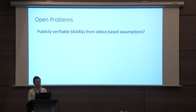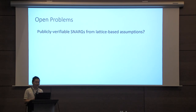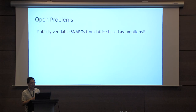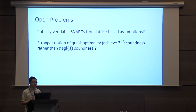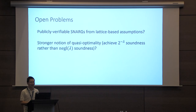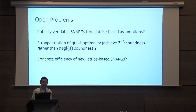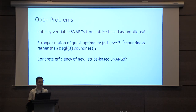Let me conclude with several open problems. All of the SNARK constructions described here, based on lattices, are only secretly verifiable — they're in a designated verifier model where soundness only holds if the proof system requires knowledge of the secret decryption key. One important question is whether we can obtain publicly verifiable SNARKs, as an analog of pairing-based SNARK constructions. Another question is trying to achieve a stronger notion of quasi-optimality — achieving 2 to the minus lambda soundness against 2 to the lambda bounded provers. Finally, our new lattice-based SNARK candidates seem to be lighter weight with asymptotically stronger properties, so we're in the process of developing implementations and comparing them against the existing pairing-based candidates.